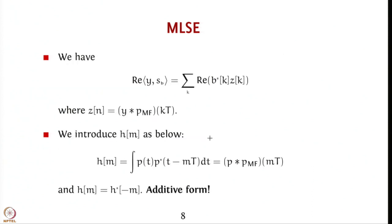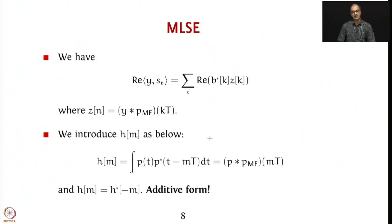We are going to look at the two parts in isolation. If you take the real part of angle bracket y, s_b, that equals summation over k of the real part of b_k* z_k. Essentially, you perform matched filtering over y to get angle bracket y, s_b, and you get z_n s_y* at the matched filter output sampled at k*T.